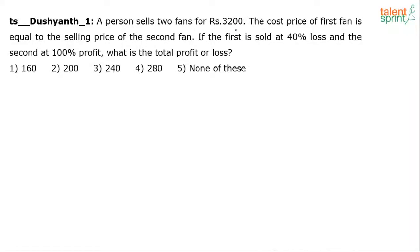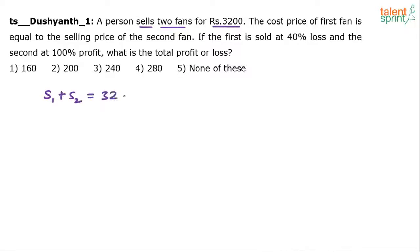A person sells two fans for rupees 3200. The whole solution depends on converting the problem statements into equations. Since 3200 is the total selling price of two fans, we can say S1 plus S2 equals 3200, where S1 is the selling price of the first fan and S2 is the selling price of the second fan.